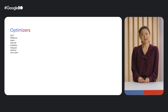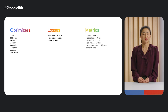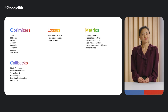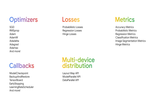Keras also comes with many built-in optimizers, losses, and metrics, as well as callbacks to track and modify your model's progress during training. The Keras API also offers you the ability to do distributed training with our multi-device distribution APIs. And of course, all these things work with our training loop abstraction, Model.fit. Let's take a closer look at the various ways we can use it.